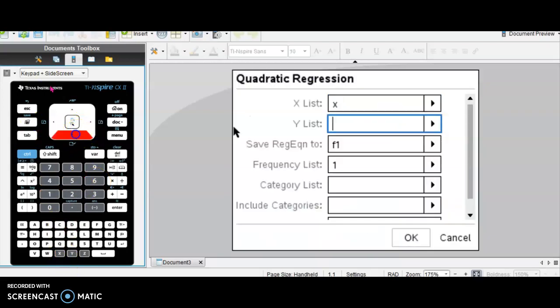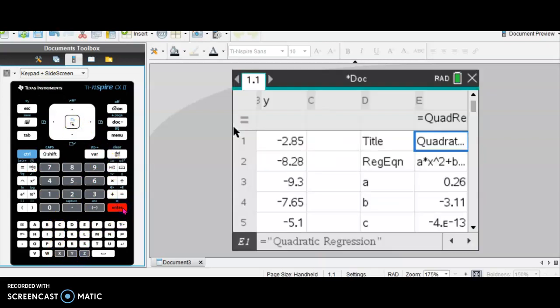Type X for X list and Y for Y list and hit enter twice. Now it's given us our A, B, and C that we can write our equation with.